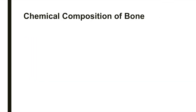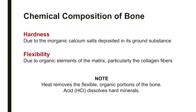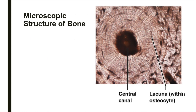Bone is one of the hardest materials in the body. The hardness of bone is due to the inorganic calcium salts deposited in its ground substance. Its flexibility comes from the organic elements of the matrix, particularly the collagen fiber. Although compact bone appears to be dense, microscopic examination reveals that it is riddled with passageways carrying blood vessels, nerves, and lymphatic vessels.